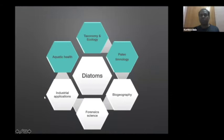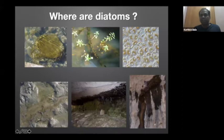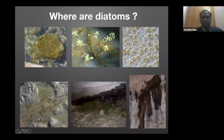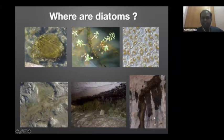Where are diatoms found? They occur in aquatic bodies — on stones as a brown material, attached to plants as brown or greenish growth, or thriving as plankton in the water column. They also occur in sediments, moss, and wall seepage, particularly in the mountains.